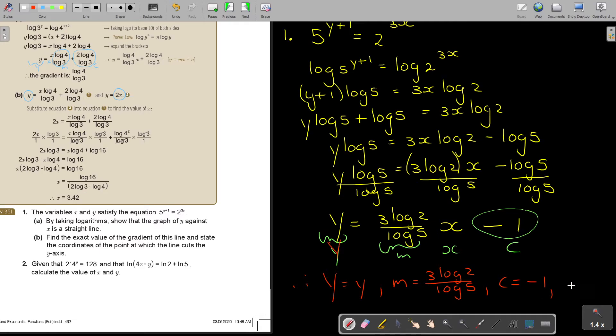We're going to say m is equal to 3 log 2 over log 5. And c is equal to negative 1. And that's how. And x, oh, I forgot of x. x is equal to x. So that's how I prove it's a straight line.